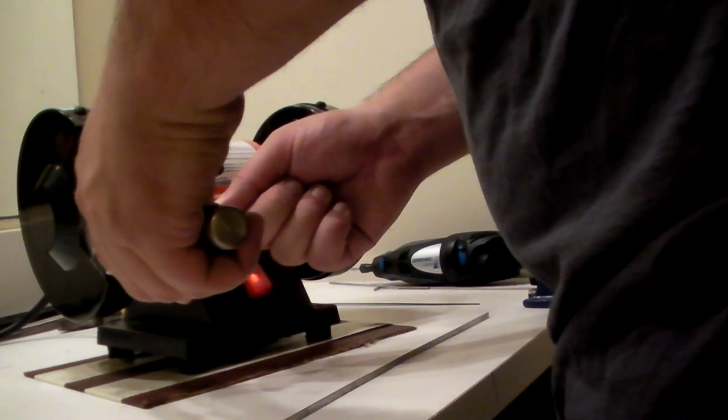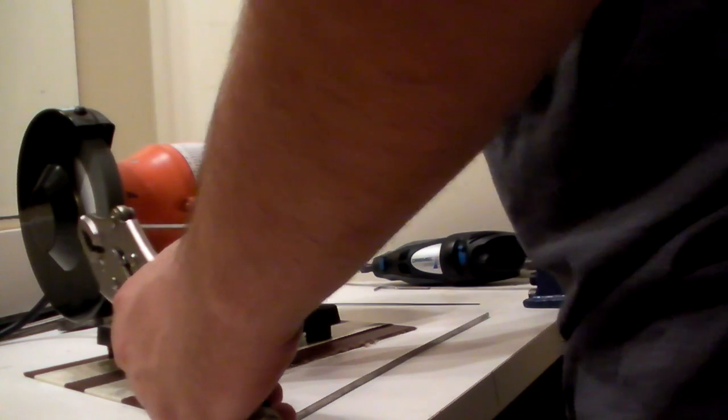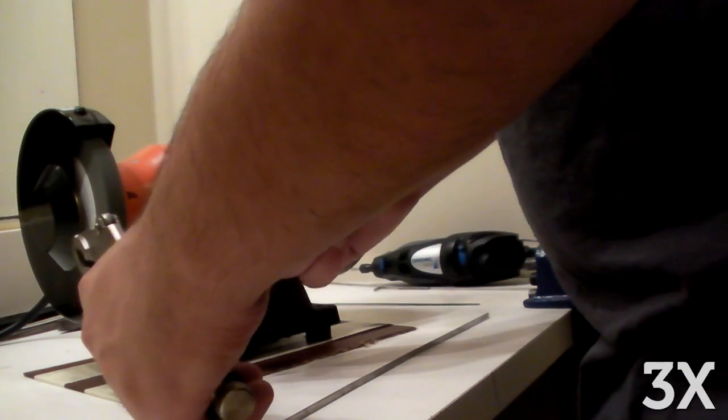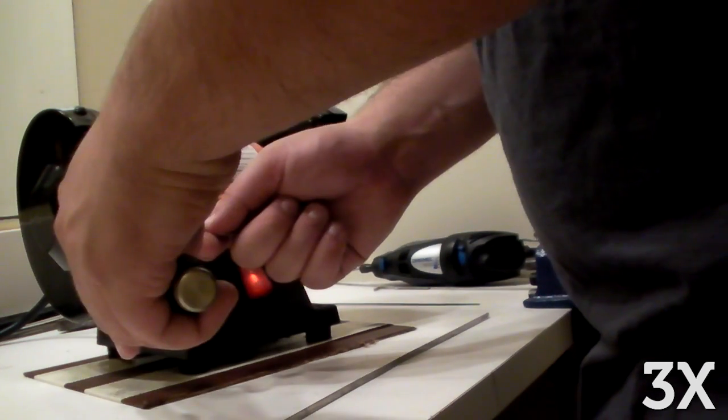Okay we're going to jump up to three times speed here, just because the grinding process takes a long time. Here I'm just creating the basic shape, removing a bunch of material toward the head of what the pick will be, to cut away material where the hook shouldn't be.